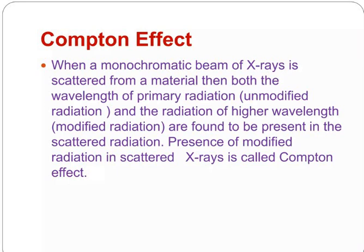Compton effect: When a monochromatic beam of X-ray is scattered from a material, then both the wavelength of primary radiation, unmodified radiation, and the radiation of higher wavelength, modified radiation, are found to be present in the scattered radiation. This scattered X-ray is called Compton effect.